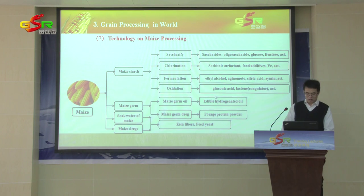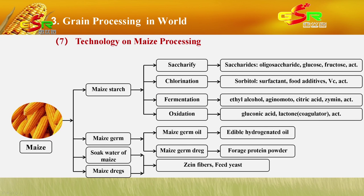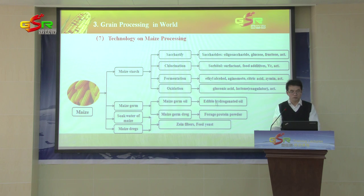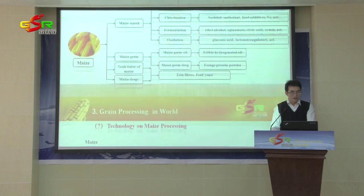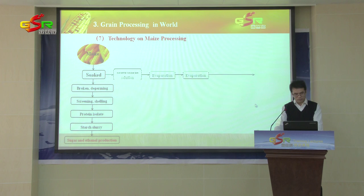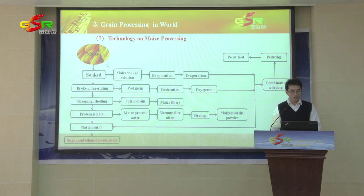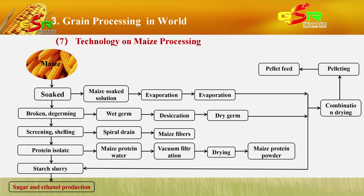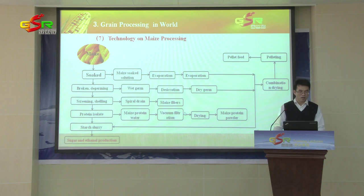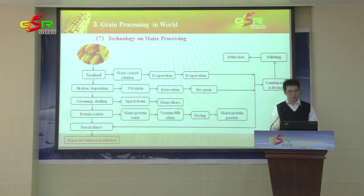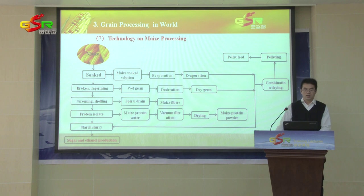This is one of the main maize processing processes. After maize processing, we can get different products like edible fiber, feed yeast, and food additives. Another main processing process yields pellet feed, and we can also get sugar and ethanol production.